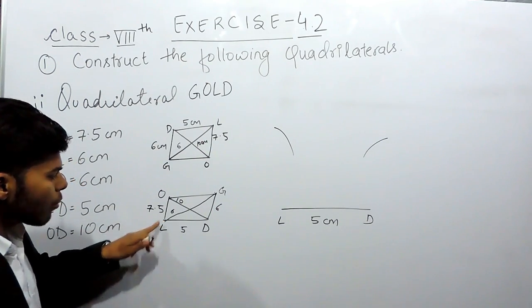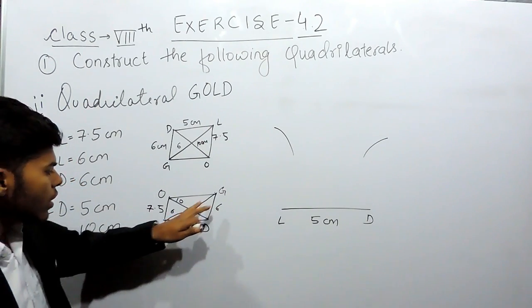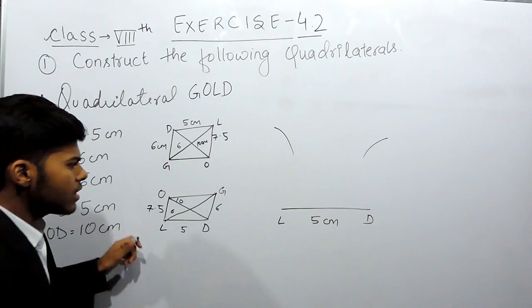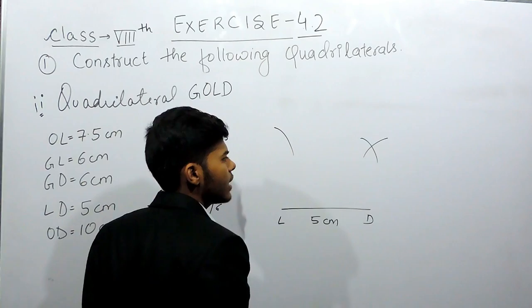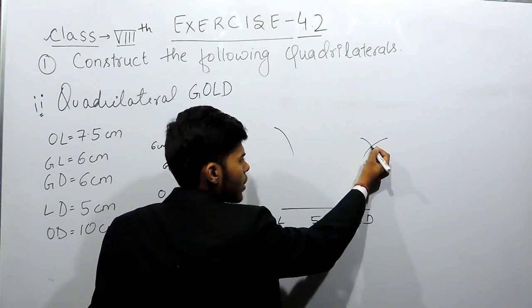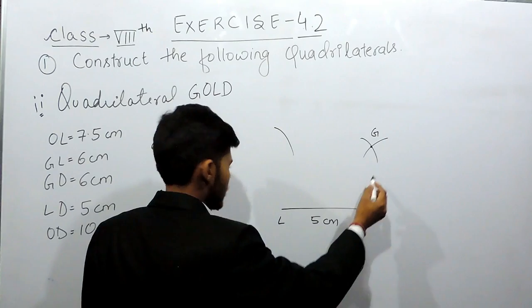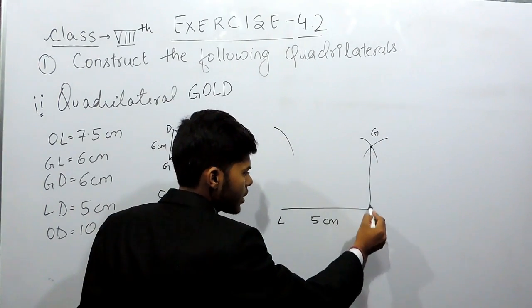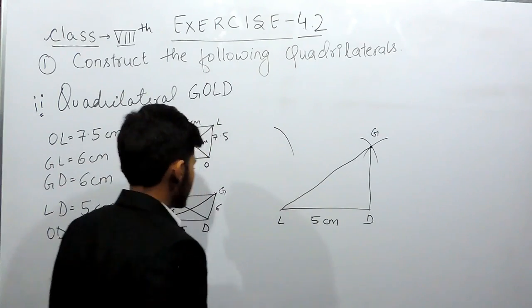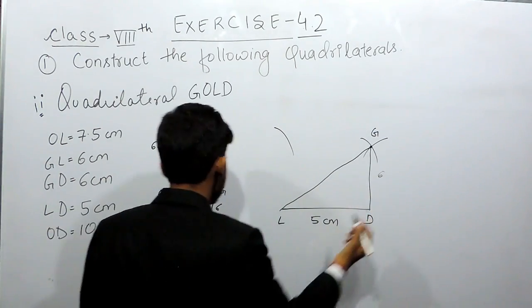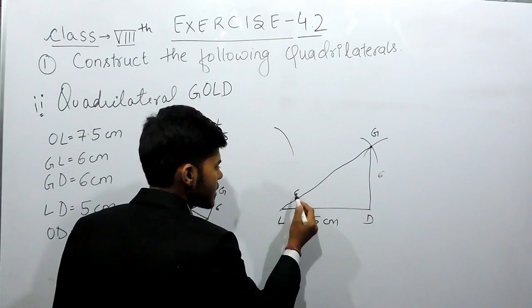After that, we will again put the compass at point L. Because LG is 6 cm, we will open the compass to 6 cm and cut an arc. This intersection point will be point G. We will join L to D, L to G, and G to D. So we will get this at 6 cm and this will also be 6 cm.